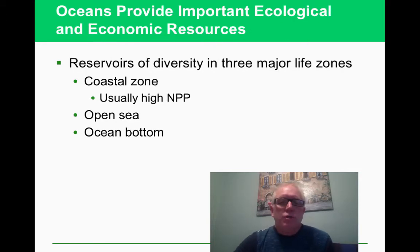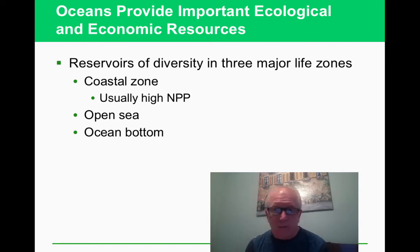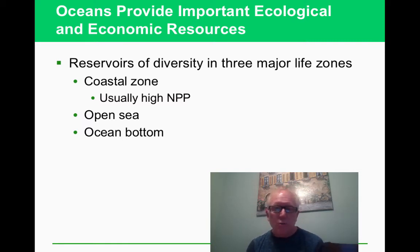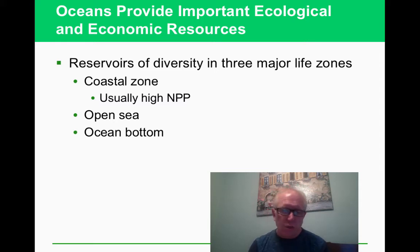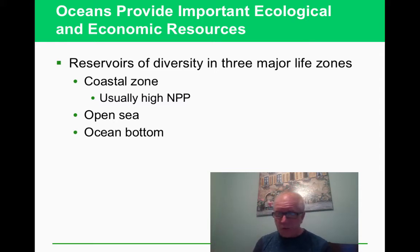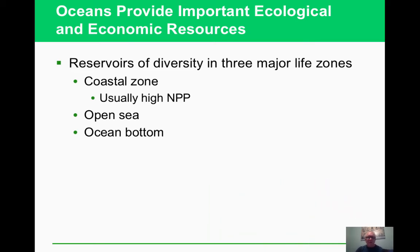In the three zones we're talking about: first, the coastal zone has lots of photosynthesis and lots of net primary productivity, drawing in species with well-developed food chains and food webs. The open sea has lots of phytoplankton and is important for developing the ocean — it's separated into the three layers discussed. And then there's the ocean bottom, which also has a lot of life on it.